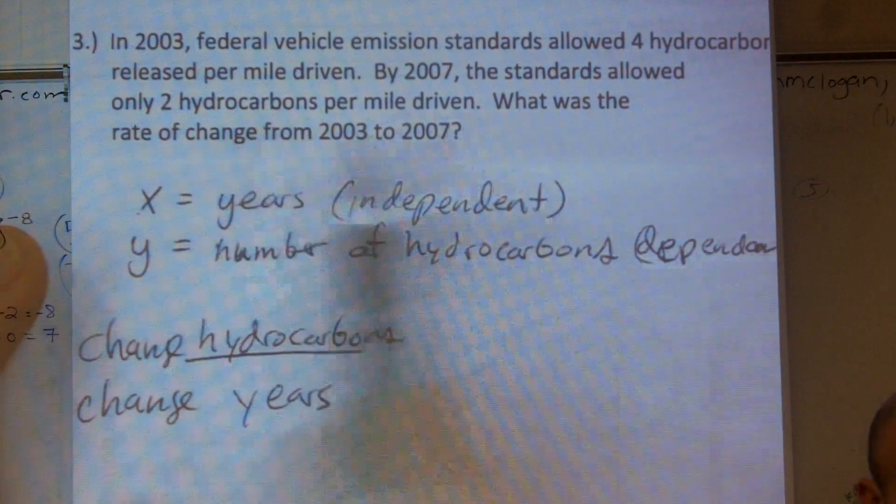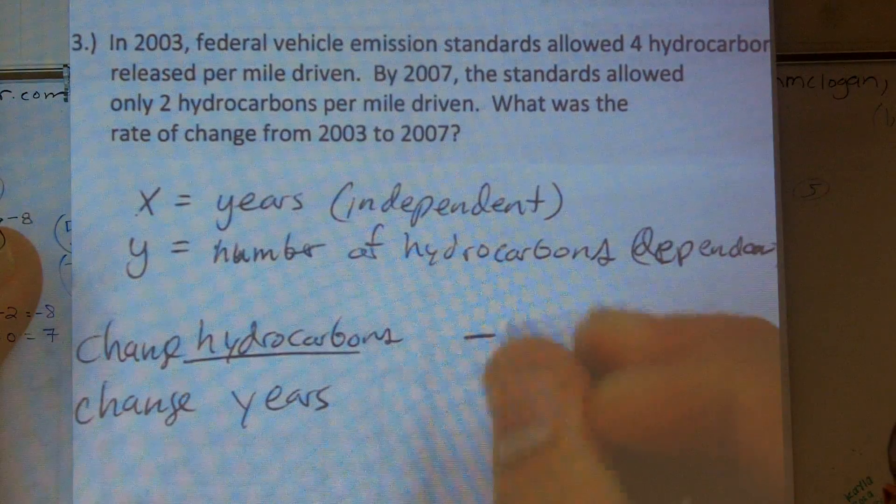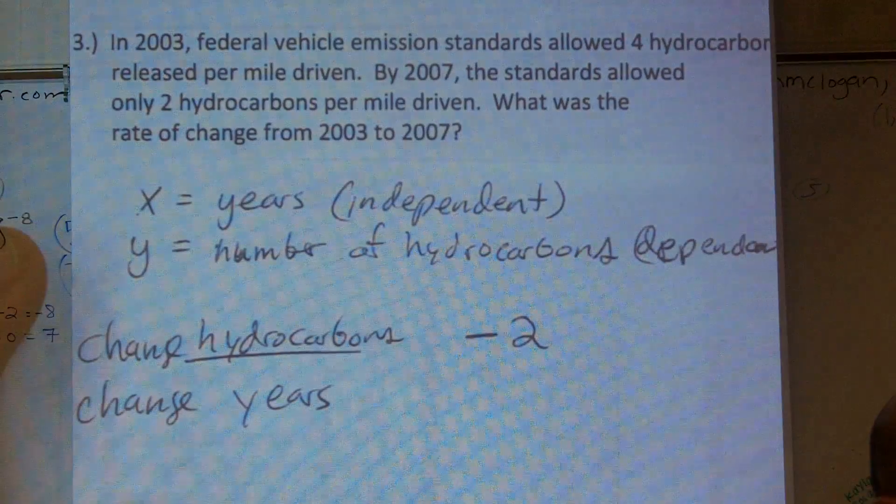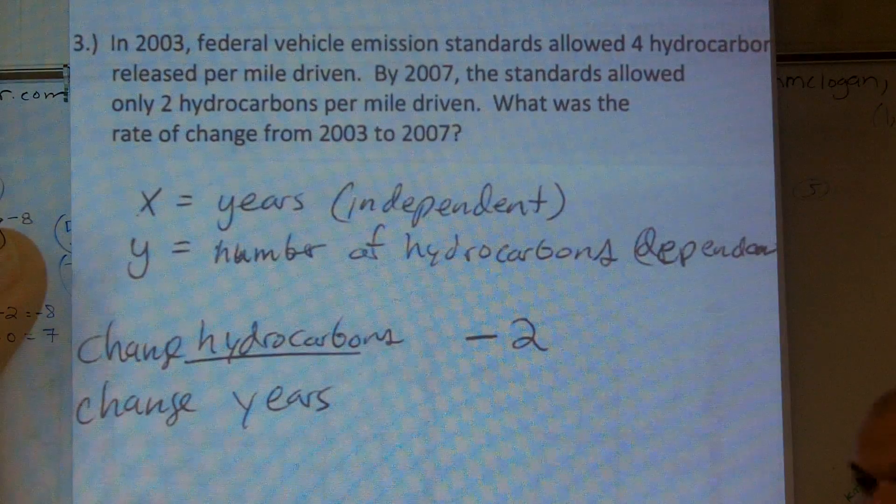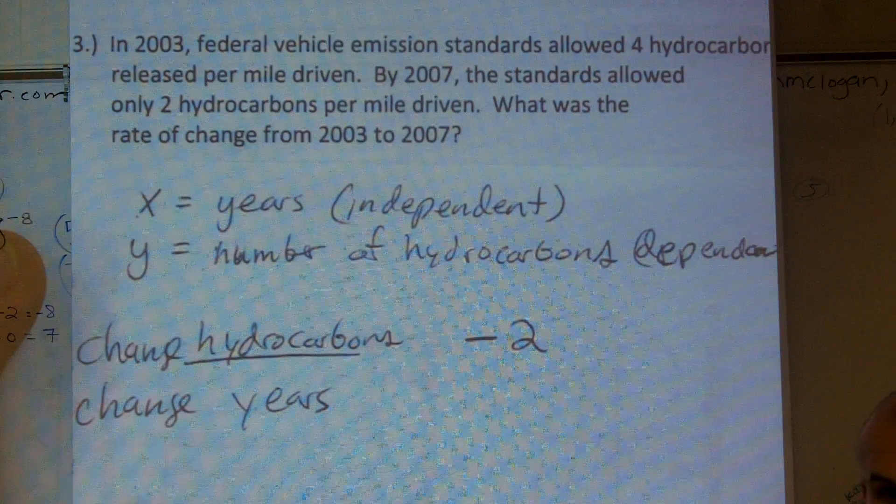They started releasing less. So therefore, it's going to be a negative, right? Because they're allowing us, they're reducing two less than the four years before.